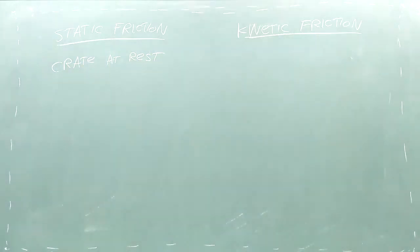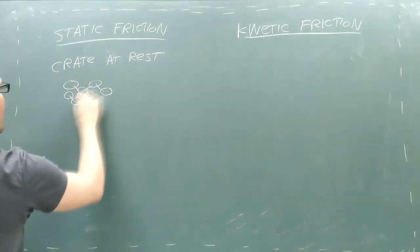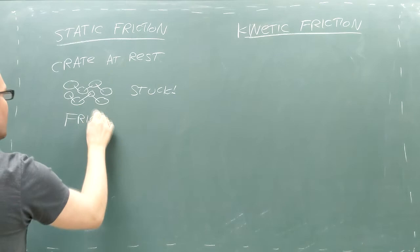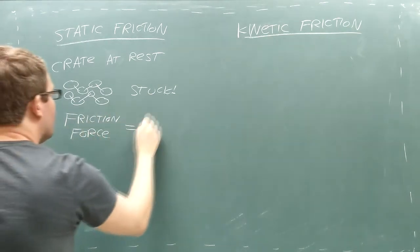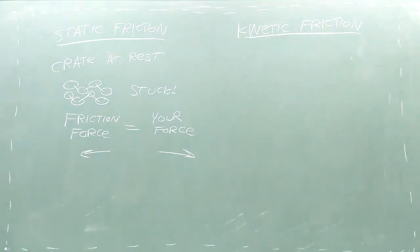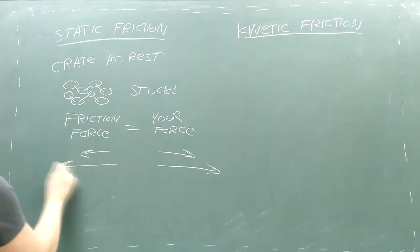When you first start to move an object at rest, static friction tries to keep the atoms stuck together. So friction will push backward with whatever amount of force you're pushing forward with. However, if you push hard enough, static friction will give out and the crate will begin to slide.